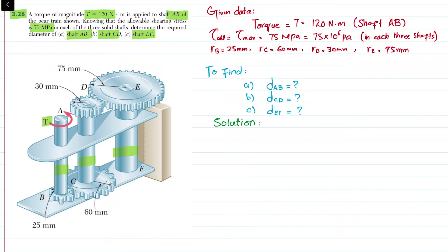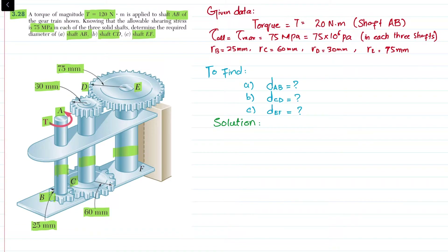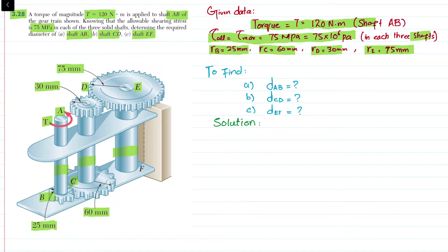The torque T is applied at shaft A. The radius of gear B is 25 mm, radius of gear C is 60 mm, radius of gear D is 30 mm, while radius of gear E is 75 mm. The applied torque T is equal to 120 Newton·meter. The allowable shearing stress is 75 MPa in each of the three shafts. We have to determine the diameter of shaft AB, shaft CD, and shaft EF. Let's start with the solution.